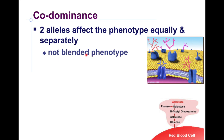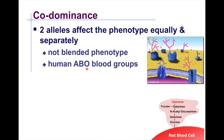In co-dominance, it does not result in a blended phenotype, unlike incomplete dominance. One example is the human ABO blood type groups. In a way, there is no recessive blood type — they will have equal opportunities to be expressed, specifically for A and B.